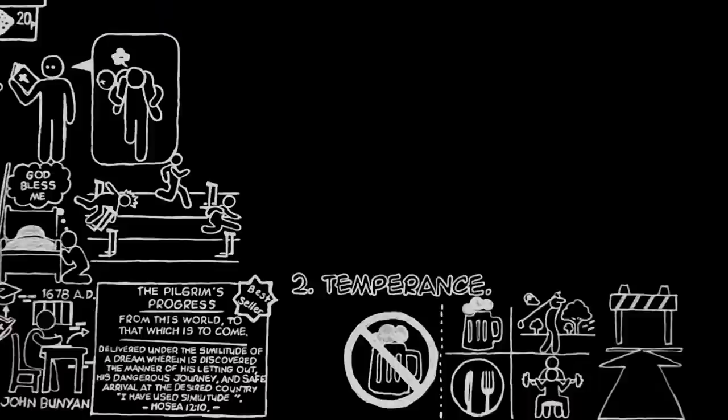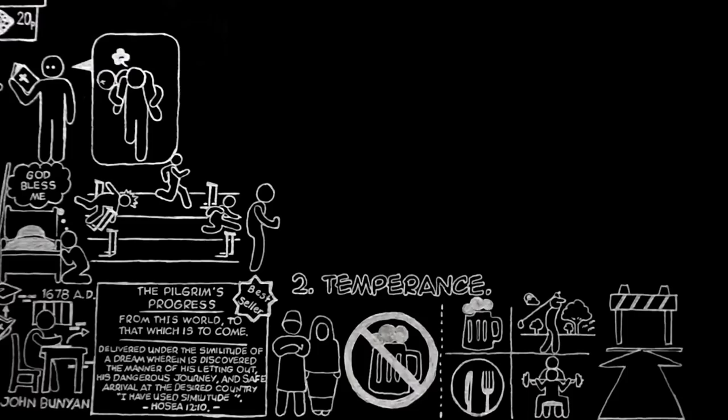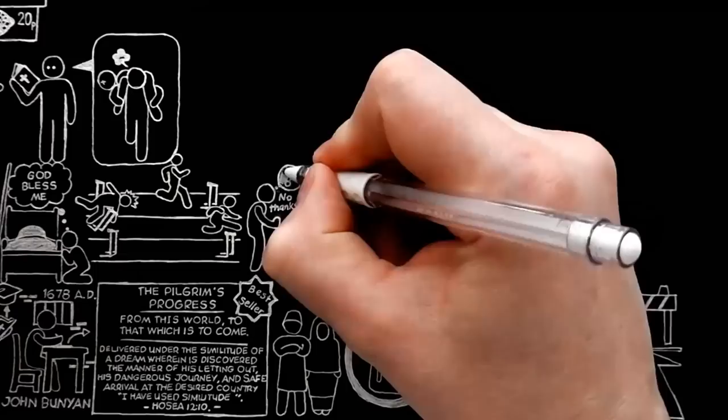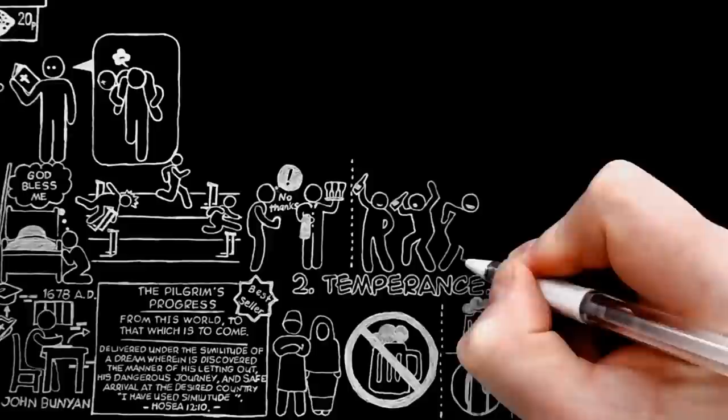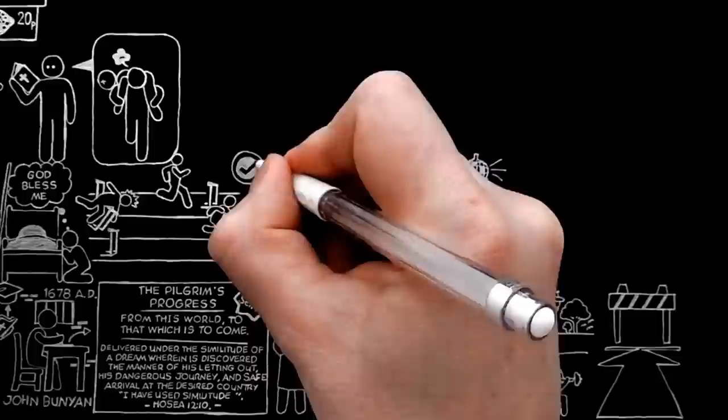Mohammedanism, not Christianity, is the teetotal religion. Of course, it may be the duty of a particular Christian, or of any Christian at a particular time, to abstain from strong drink, either because he is the sort of man who cannot drink at all without drinking too much, or because he is with people who are inclined to drunkenness and must not encourage them by drinking himself. But the whole point is that he is abstaining for a good reason from something which he does not condemn and which he likes to see other people enjoying.